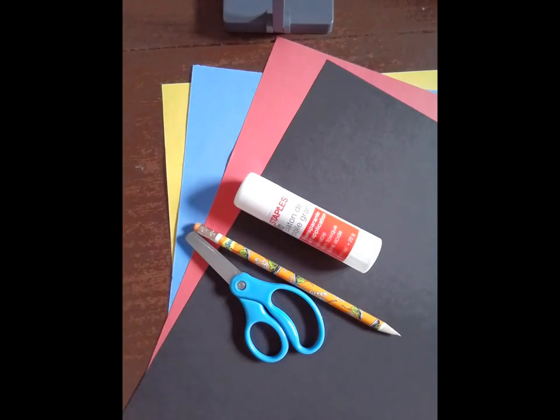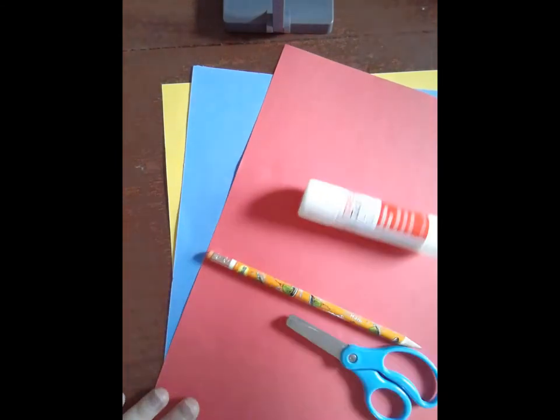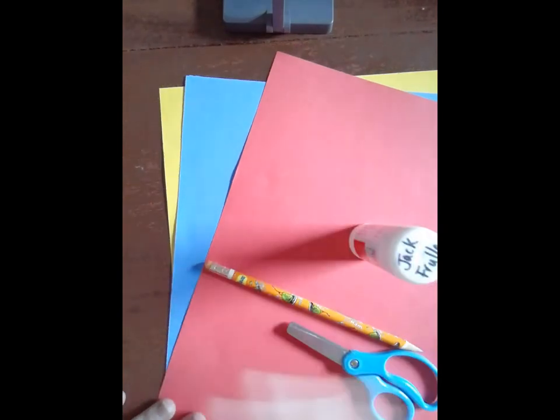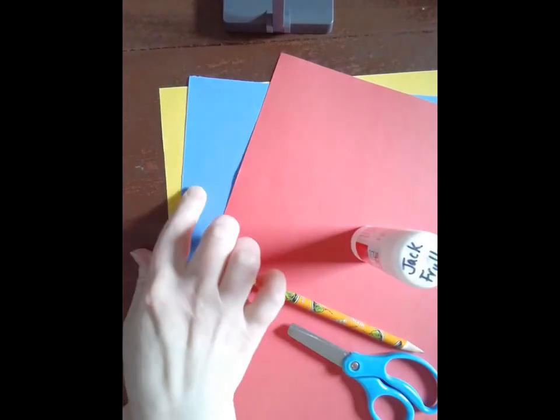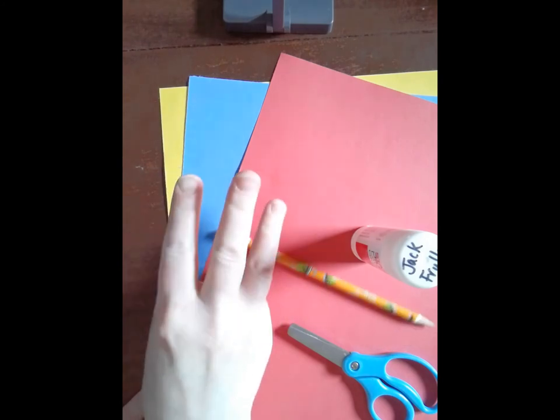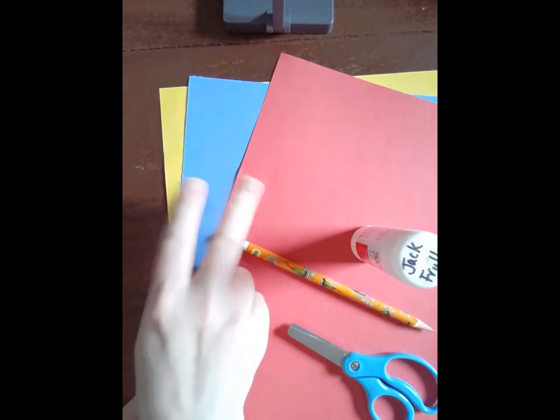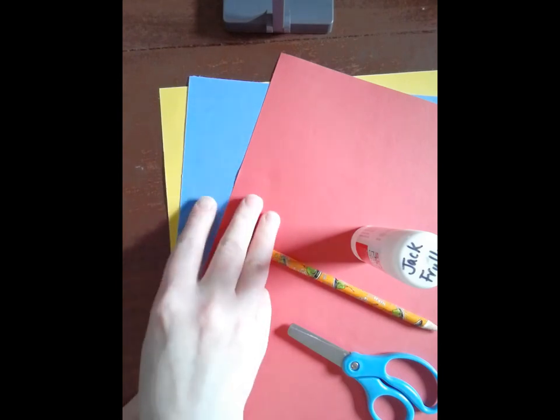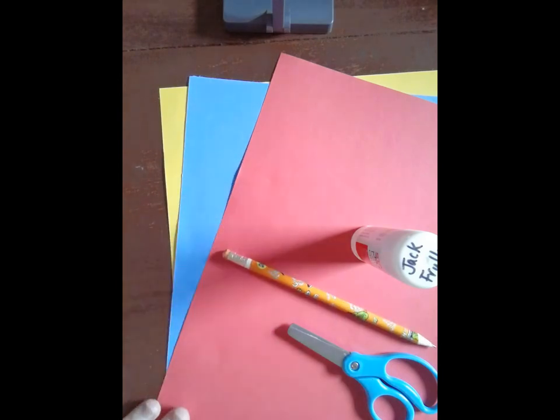I'm going to start by cutting out some squares and rectangles out of my red, blue, and yellow paper. I'm going to do three different sizes: large shapes, medium shapes, and little teeny tiny baby shapes. I'm going to pause the video while I do that, and then I'll pick it up and show you what I've done.